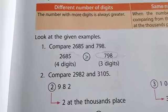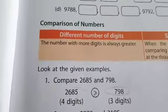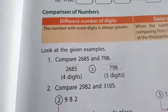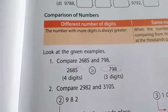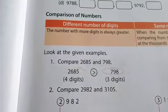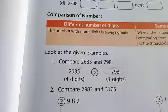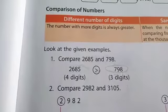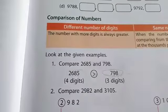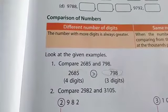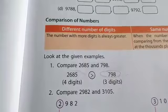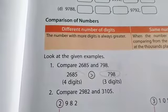Good morning everyone. Today we are going to learn comparison of numbers. Comparison means finding out which is more or less — we call this comparison. We are going to compare numbers. For example, your friend gives you four chocolates and you give him five chocolates. Who is giving more? Five — because five is a greater number. So like that, we are comparing.